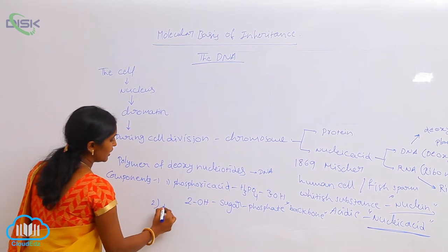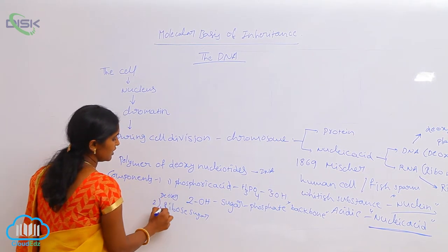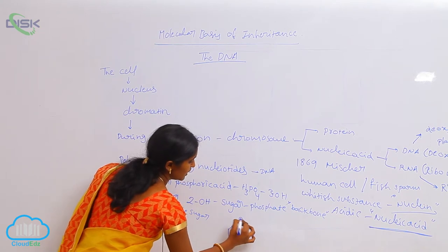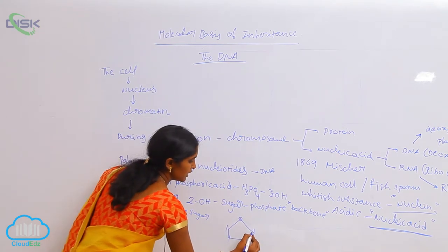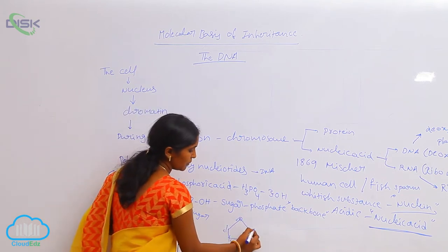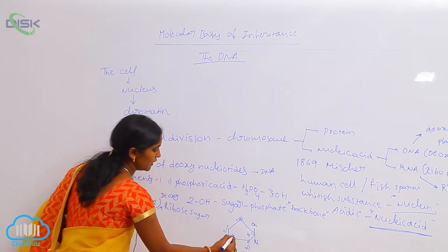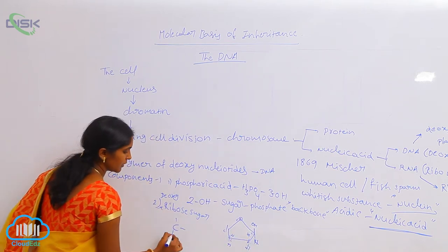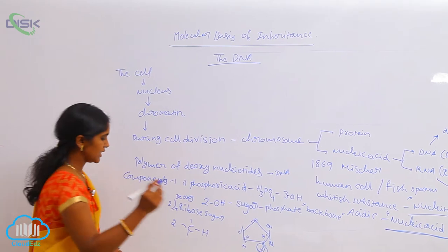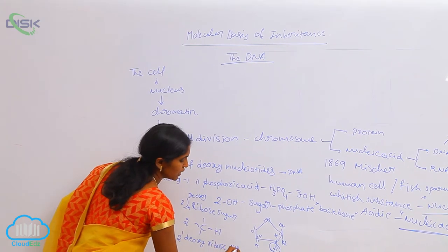The next key component is ribosugar — specifically deoxyribosugar. When you look at the sugar structure, it is a five-carbon ring: first, second, third, fourth, and fifth carbon. At the second carbon, the OH group is absent. This means one oxygen molecule is absent, which is why it is called 2-deoxyribosugar.